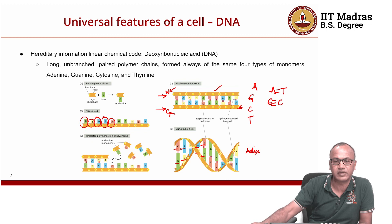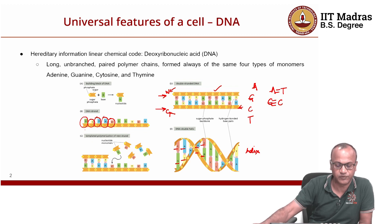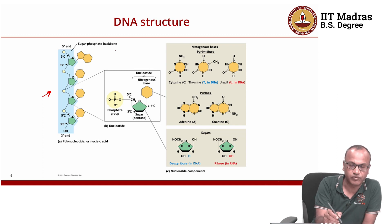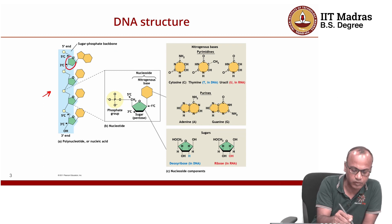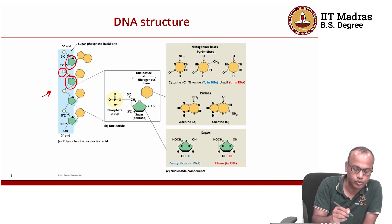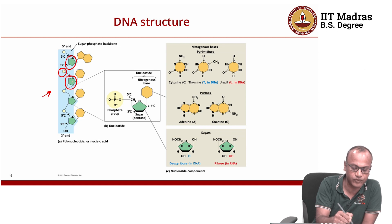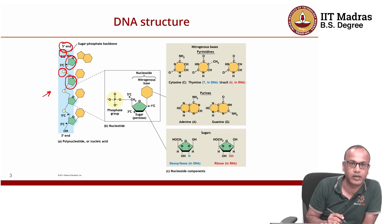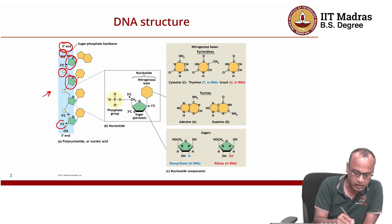Diving a little deeper into the structure of DNA: on the left you can see what is called the sugar-phosphate backbone. There is a 5-carbon sugar molecule alternating with a phosphate molecule that connects two sugar molecules — sugar, phosphate, sugar, phosphate, and so on. One end of the sugar has a 5-prime carbon, so that end is called the 5-prime end; the other has a 3-prime hydroxyl group, called the 3-prime end.